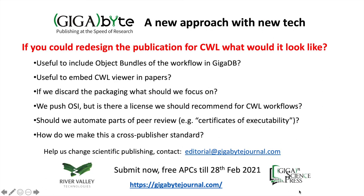We're also leveraging dynamic content — you can build things on top of the data and embed widgets. With that in mind, I'd like to ask you: if you could redesign the publication unit with credit for CWL articles and workflows, what would it look like? Are object bundles useful? Could we embed visualization tools like CWL viewer? If we're discarding all of this packaging, what should we focus on? What are the key things? Is it useful to do things like code-check certificates of executability? Would automating parts of peer review be useful? What are the key licenses we should use? And how do we take this beyond just us and make it a cross-publisher standard?